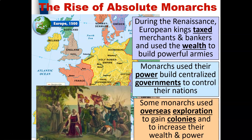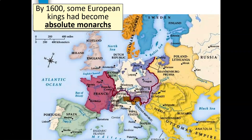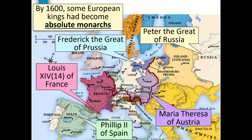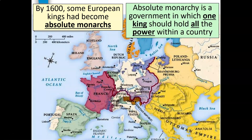Some monarchs used overseas exploration to gain colonies and increase their wealth and power. This is what we see during the Age of Exploration — nations such as Spain, England, and many others were acquiring territories and colonies for their own benefit. By the 1600s, some European kings had already become absolute monarchs, for example Philip II of Spain, Louis the 14th of France, Frederick the Great of Prussia, Peter the Great of Russia, and Maria Theresa of Austria.